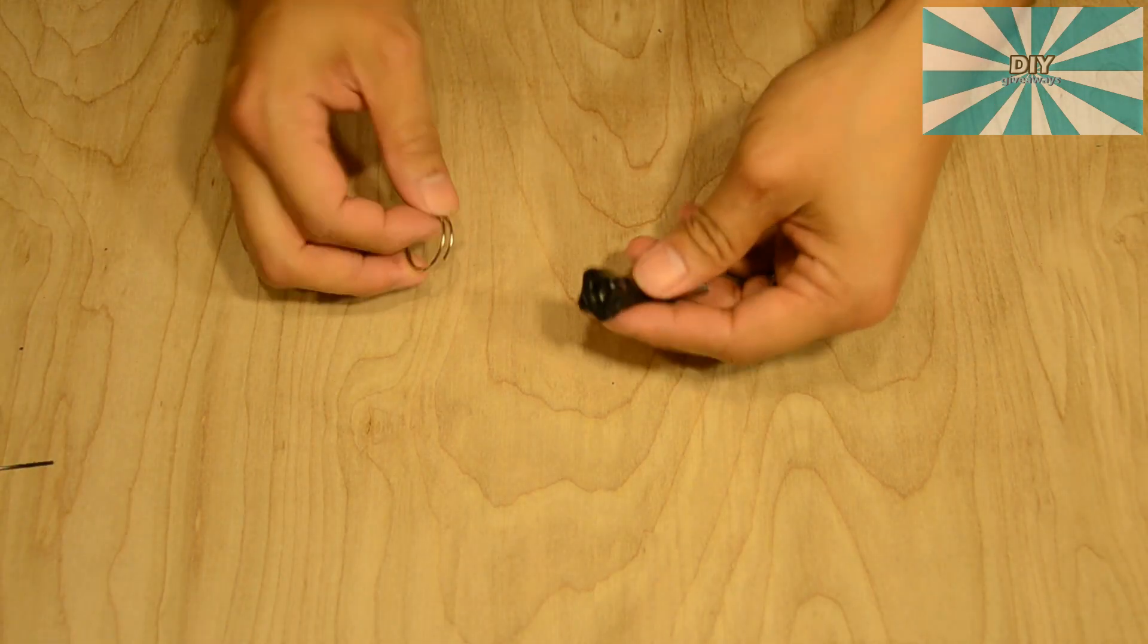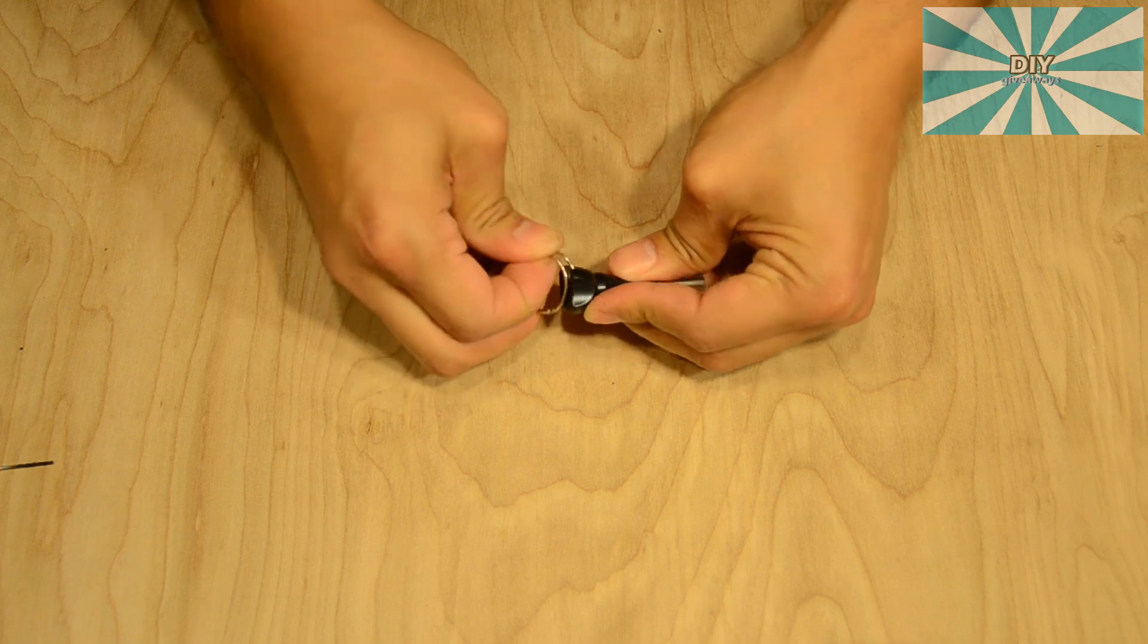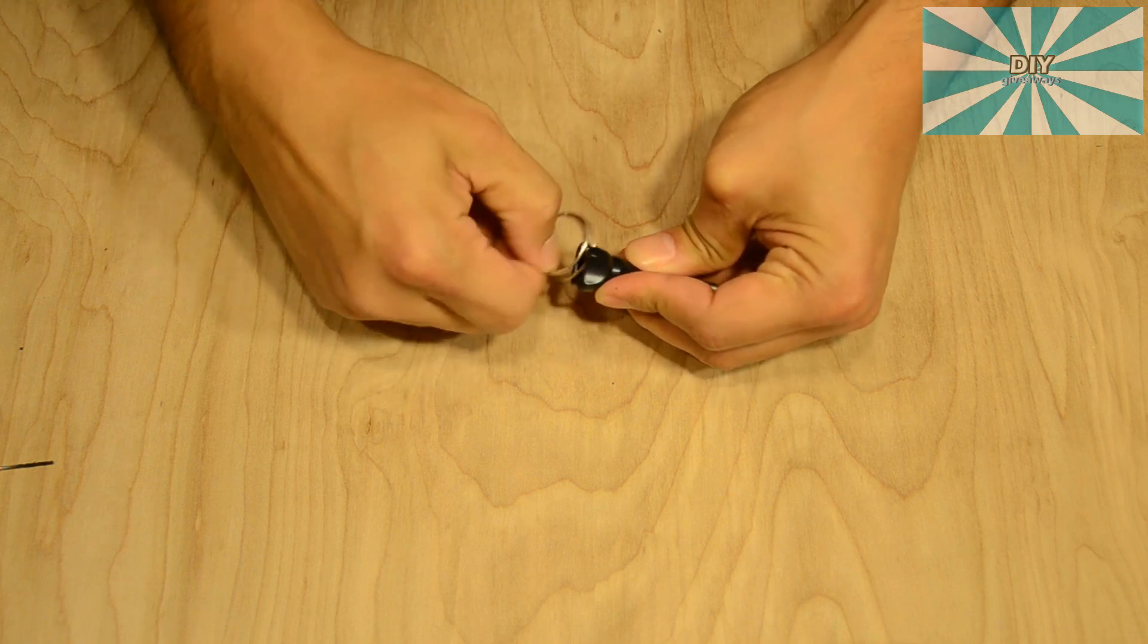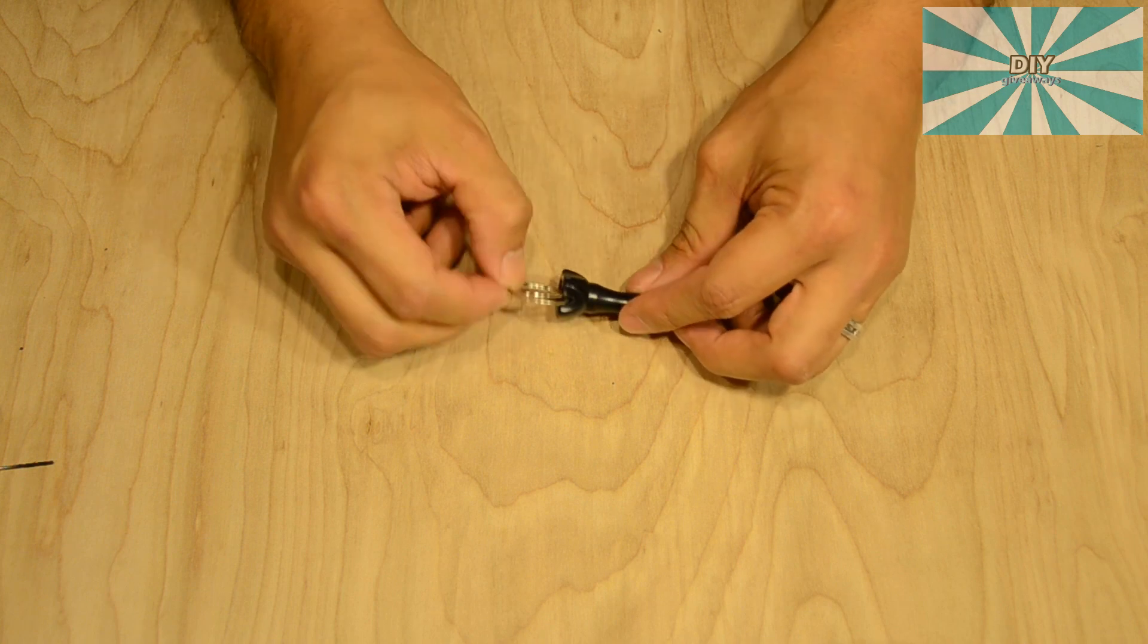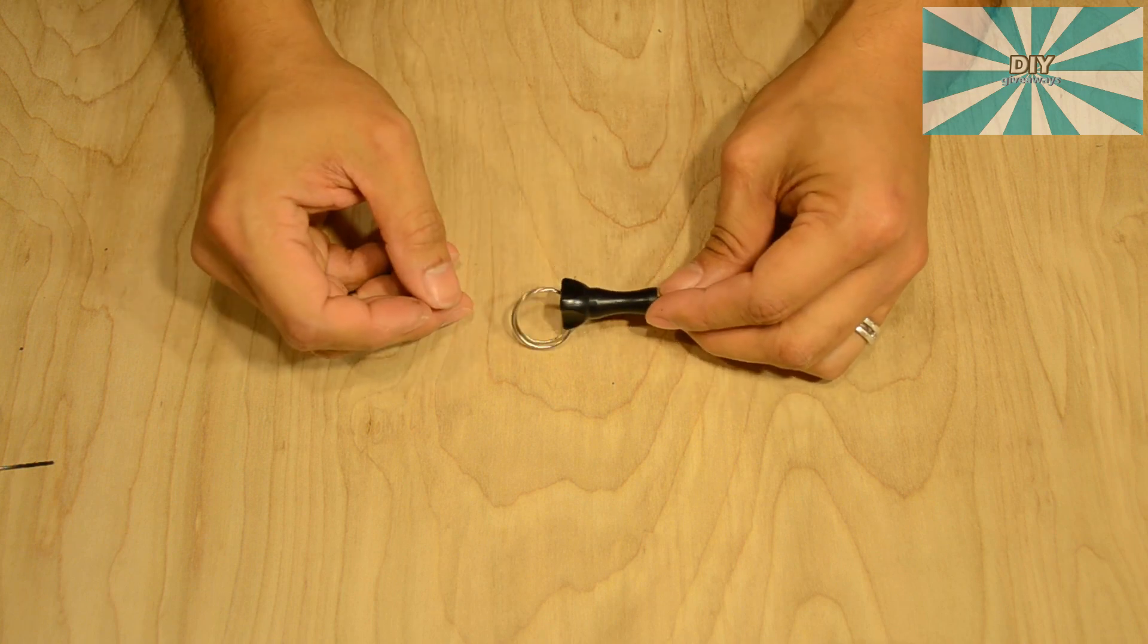Finally, insert the keychain ring into the hole. You can now use this loop to clip a tether or a floating device to keep your GoPro safe.